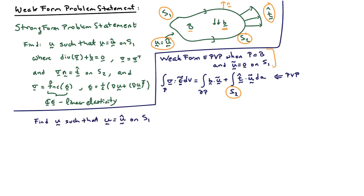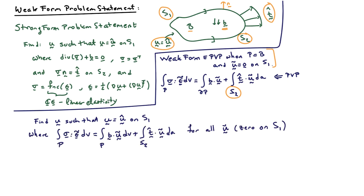The weak form statement is as follows: find u such that u equals u-hat on S1, where the integral of σ double-contracted with the virtual strain rate field, plus the body forces dotted with the virtual velocity field, plus the imposed tractions t-hat dotted with the virtual velocity field — all integrated over their respective domains — holds for all virtual velocity fields ũ that are zero on S1.